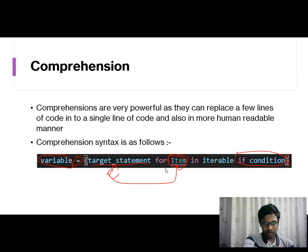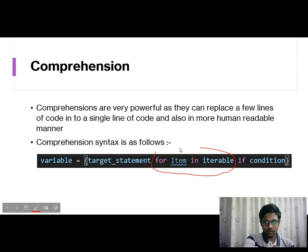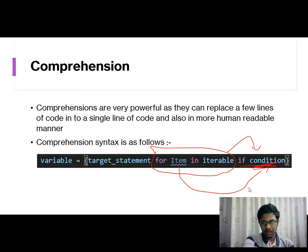First this for loop will be executed, and then if there are any if conditions, it will check whether this item is satisfying the condition. If true, then this value will go to the target statement.